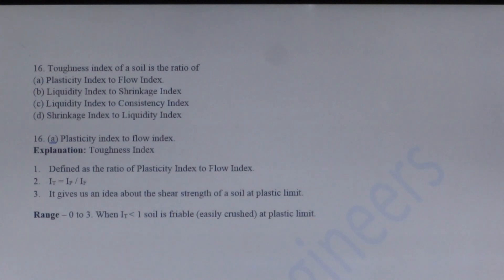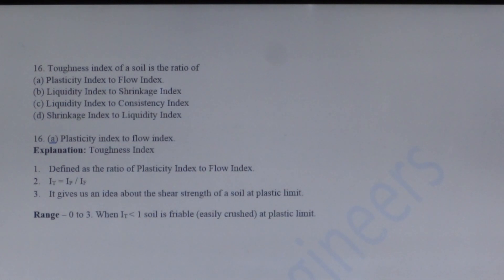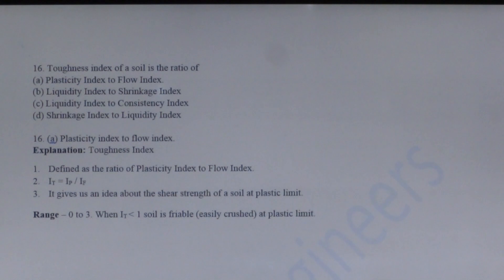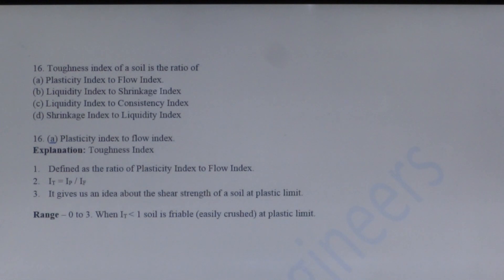Next question: The toughness index of a soil is the ratio of what? The toughness index is the ratio of plasticity index to flow index, equal to IP/IF. It gives an idea of the shear strength of the soil at the plastic limit.